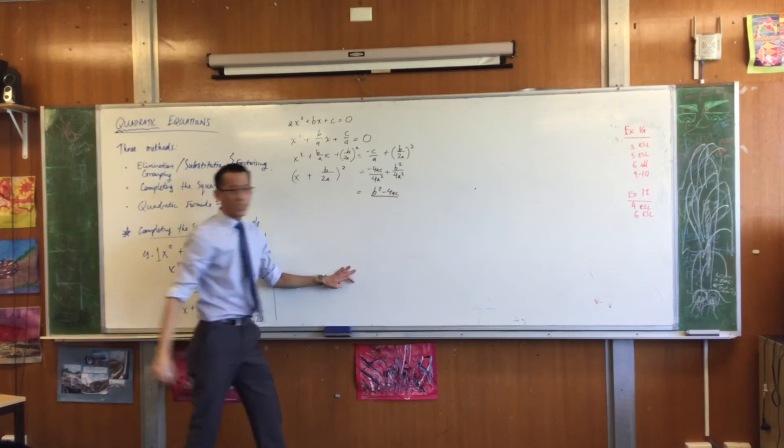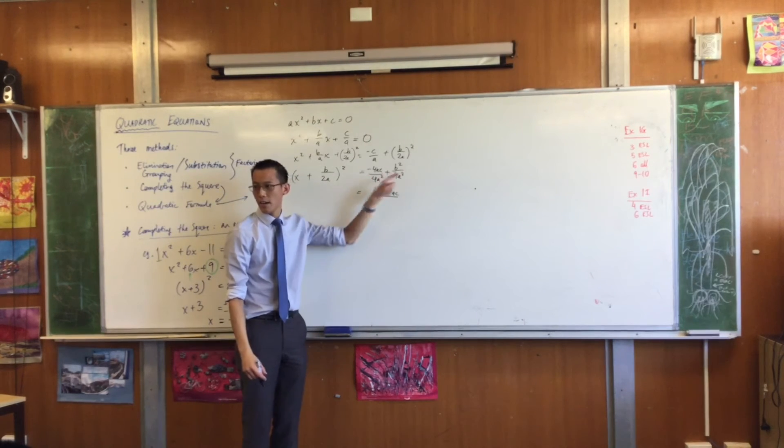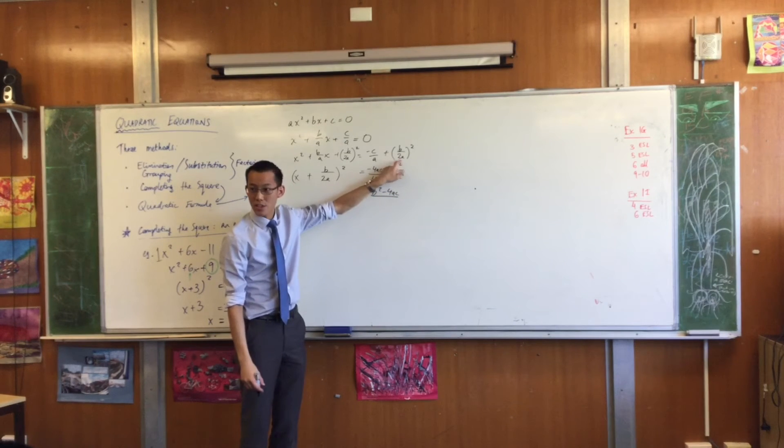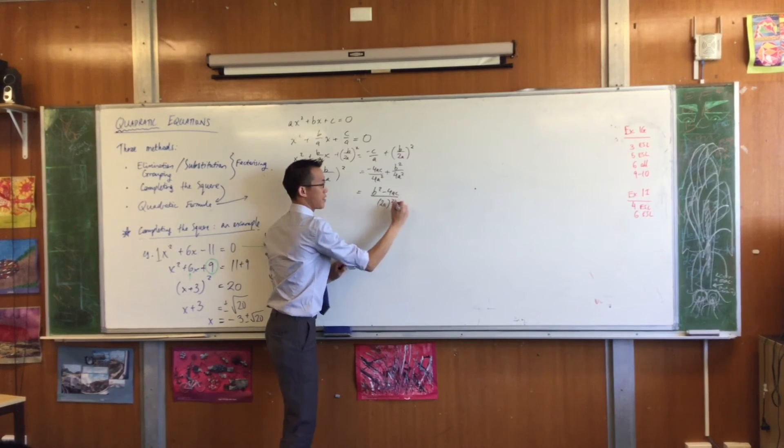Do you remember that denominator? It's 4a squared now, but where did it come from again? It came from 2a squared. That should have set up alarm bells as well. If I write that as (2a)², remember what's on the left hand side.